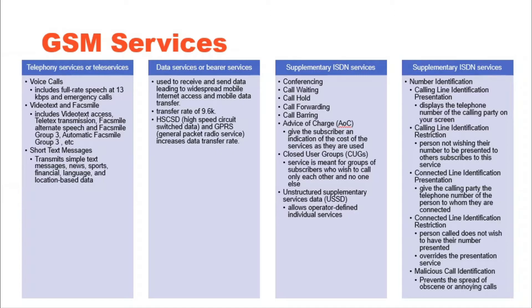Call forwarding is used to divert calls from the original recipient to another number. Call barring is used to restrict certain types of outgoing calls such as ISD, or to stop incoming calls from undesired numbers. Advice of charge is a service designed to give the subscriber an indication of the cost of services they are using.